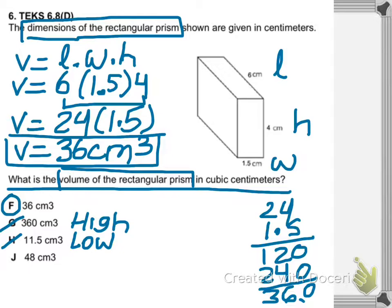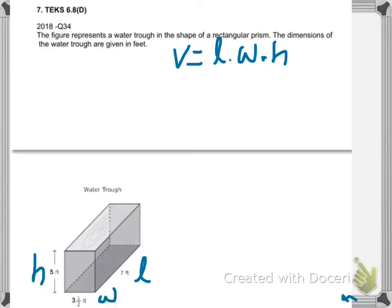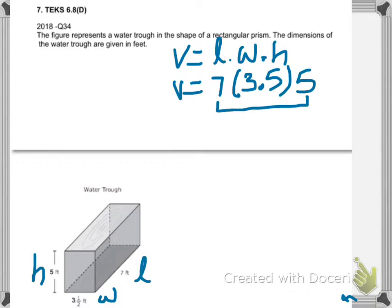The last problem is finding the volume of a rectangular prism with three given dimensions. First, write your formula: length times width times height. Label the dimensions on the shape — length is seven feet, height is five feet, and width is 3.5. Multiplying the three numbers will give you the volume. The third step: multiply seven times five, which is thirty-five.